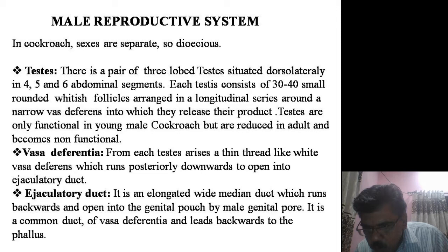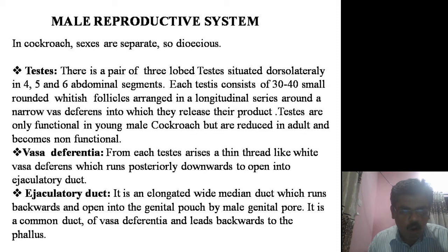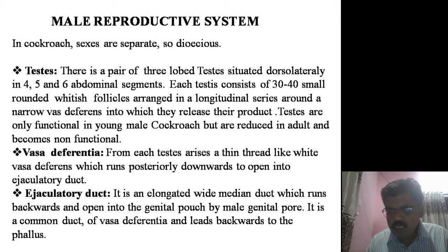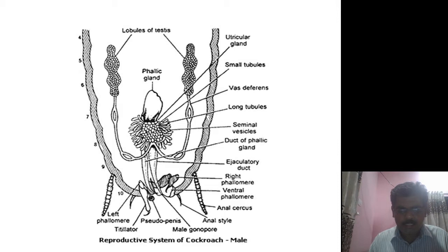The male reproductive system of cockroach has the pair of testes, which are trilobed structures and are present dorsolaterally in the fourth, fifth, and sixth abdominal segments. Each testis comprises 30 to 40 small rounded whitish follicles, arranged in a longitudinal series around the vas deferens, into which they release their secretions or spermatozoa. Testes are only functional in young male cockroach.